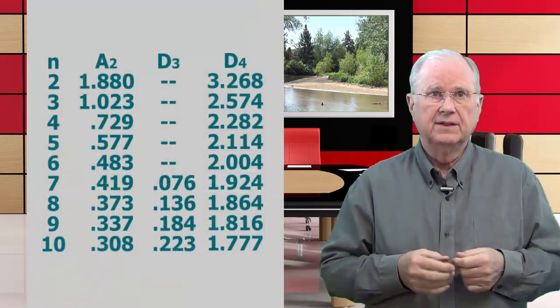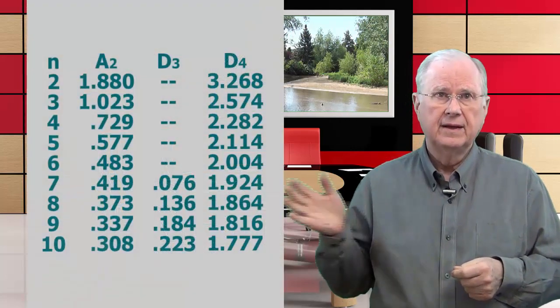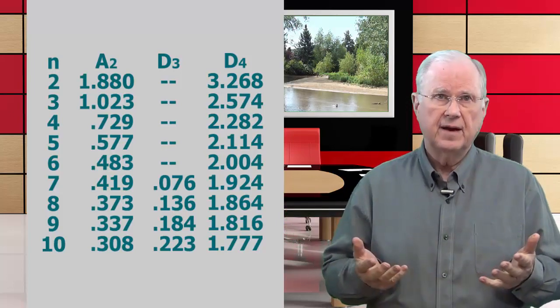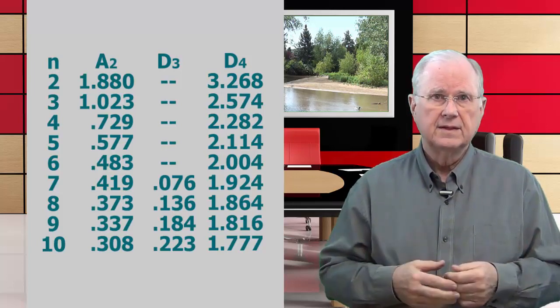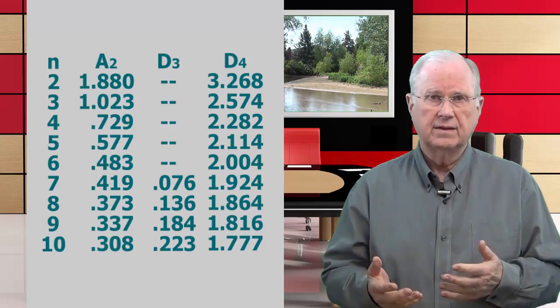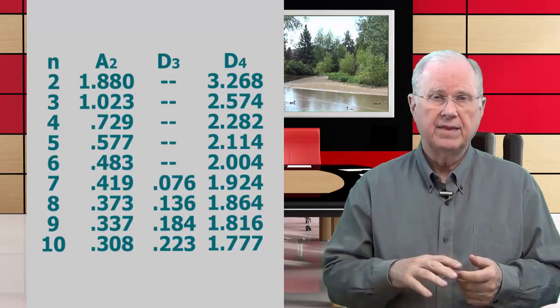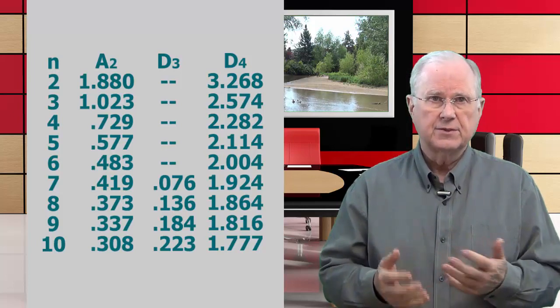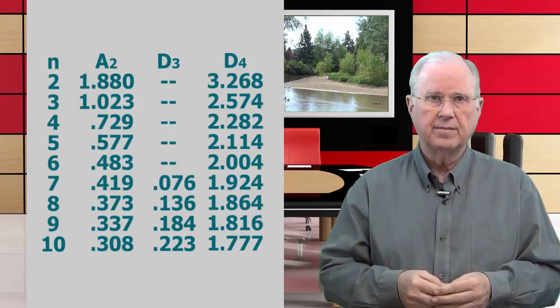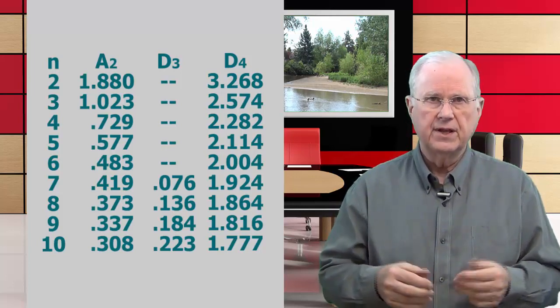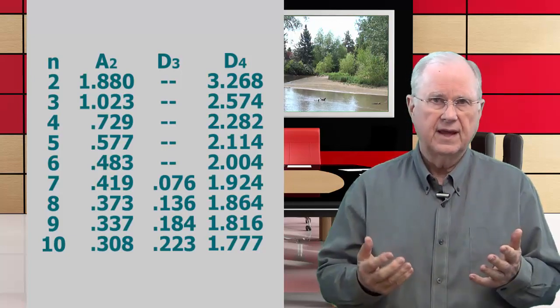Just in case you're stuck on a desert island and feel compelled to do an X-bar and R chart by hand, here are the constants that you'll need. The value of the constants depends on how many data you have in each subgroup. The calculations start with the value of the center line of the range chart, R-bar. Multiply that by the appropriate A2 constant, then add and subtract that versus the X-bar center line to get the limits for the upper chart. For the lower chart, you just multiply R-bar by the D3 and D4 constants, and that gives you your chart limits.